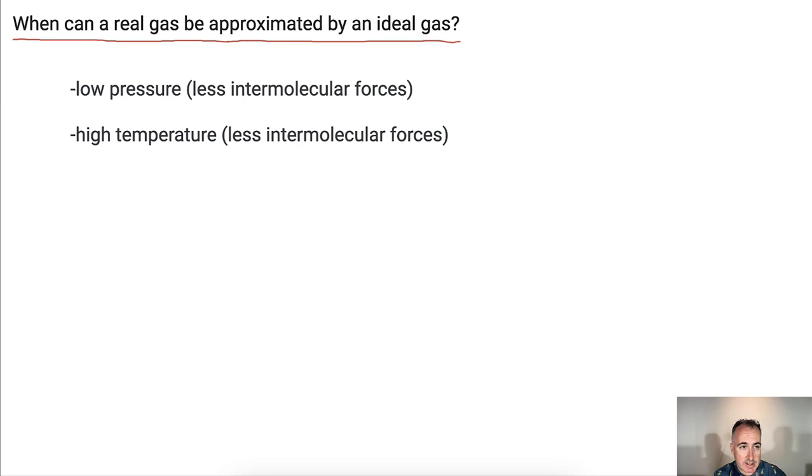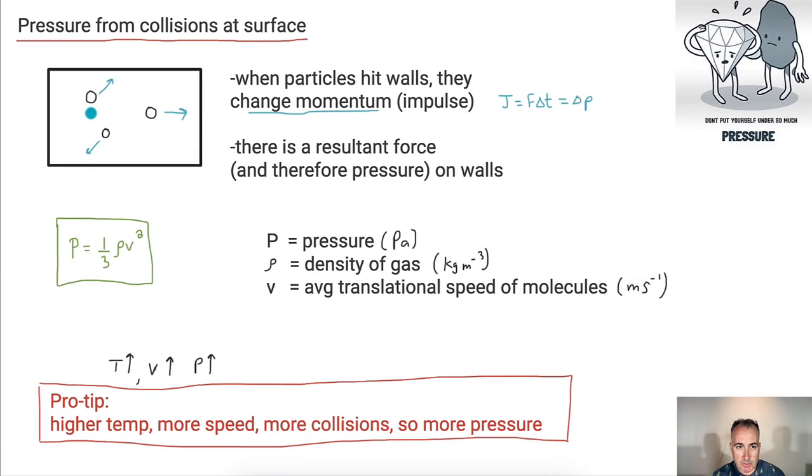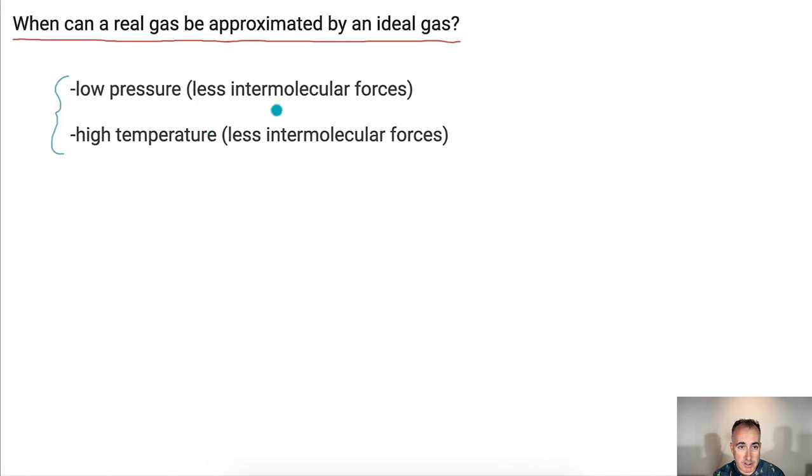And finally, just the last little thing right here. When can we approximate a real gas by an ideal gas? In other words, when can we say a real gas is behaving like an ideal gas? Well, if we have very low pressure in it, because if there's low pressure, that means there's less intermolecular forces. They're not attracting each other, repelling each other. And also at high temperature, because high temperature, they're just bouncing so fast, there's less forces as well. Those are some of the key pieces, at least these two are the main ones you should really know about.